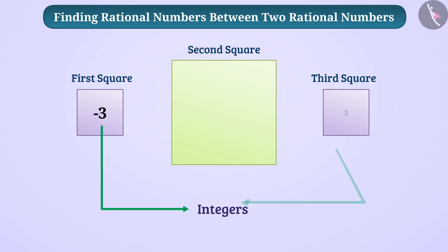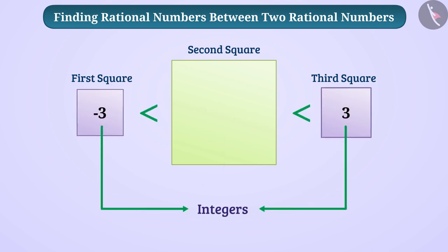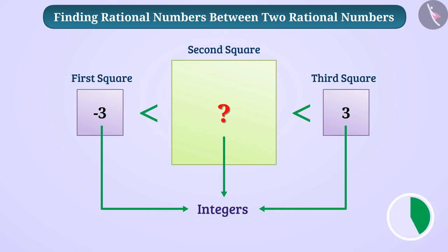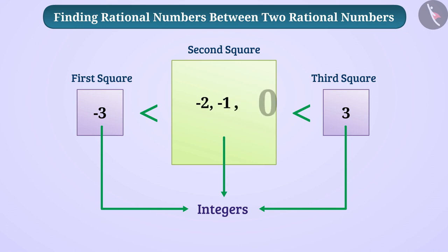Now suppose we write integers minus 3 and 3 in the first and third squares. In this we can write minus 2, minus 1, 0, 1, 2 integers. Apart from these we cannot write any other integer. In this way, there are fixed integers between any two integers.